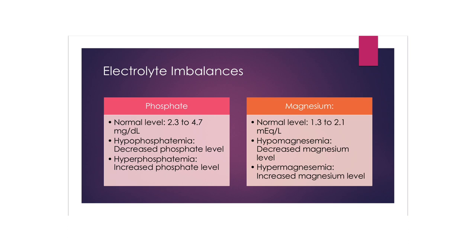Magnesium is the second most abundant intracellular cation, with a normal serum range of 1.3 to 2.1. Hypomagnesemia — a decreased serum magnesium level — is caused by diminished magnesium absorption or intake, as with malabsorption, chronic diarrhea, laxative abuse, or malnutrition. Increased renal loss can occur with diuretic use, excess aldosterone, hypercalcemia, and volume expansion. Miscellaneous causes include diabetes, respiratory alkalosis, and pregnancy. It presents with weakness, muscle cramps, neuromuscular and CNS hyperirritability with tremors and jerking, hypertension, tachycardia, ventricular dysrhythmias, confusion, and disorientation.